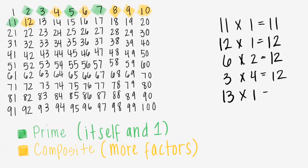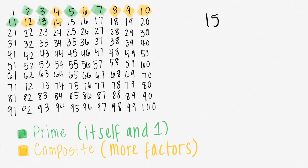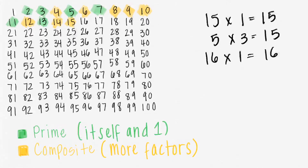13 times 1 equals 13, and there's no other possible way to get 13, so 13 is prime. 14 times 1 equals 14, but 7 times 2 also equals 14, so 14 is composite. 15 times 1 equals 15, but 5 times 3 also equals 15, so 15 is composite. 16 times 1 equals 16, but 4 times 4 also gives you 16, so 16 is composite.